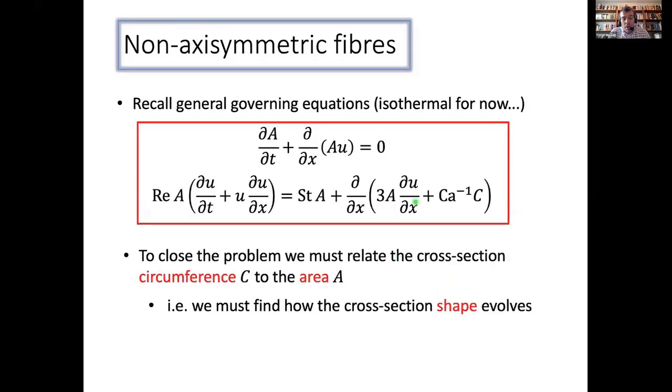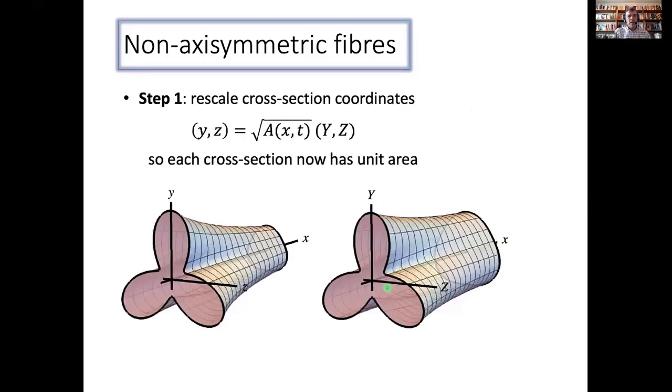So these are the same governing equations that I wrote down before. I'm taking isothermal for now, just to simplify things. So my problem is, I've got two equations for three unknowns, because I've got the velocity, cross section area and the circumference. So how am I going to relate the circumference to the area when it's not a circle? And so I've got to figure out how the shape of the cross section evolves.